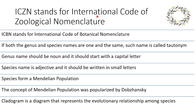ICZN stands for International Code of Zoological Nomenclature. ICBN stands for International Code of Botanical Nomenclature. If both the genus and species names are one and the same, such a name is called Tautonymy.